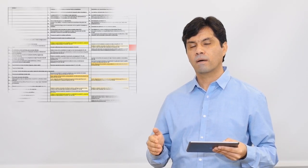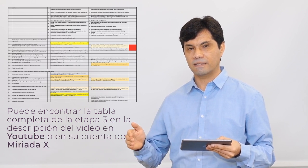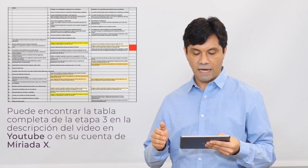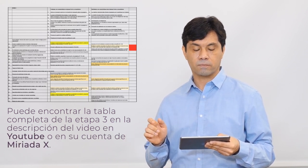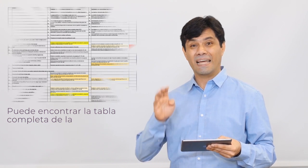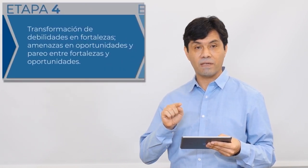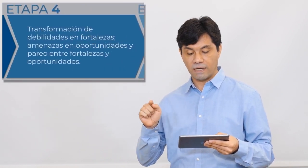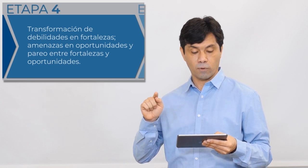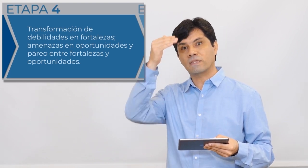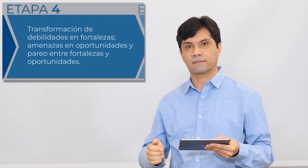For the DOFA analysis, we can review the list that appears in this link and we can see the complete cruce. Now, in the 4th stage, we will see how to convert the debilities into fortalezas, the threats into opportunities, and make the pareo between opportunities and fortalezas.